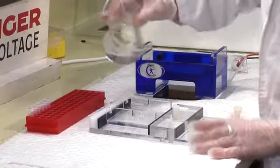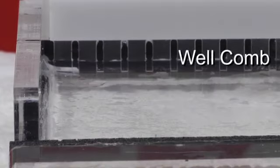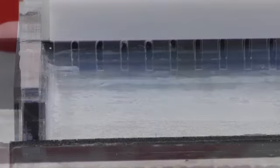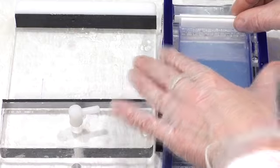So first we've got to make a gel. We just pour melted agarose into a gel caster, we add a well comb to make the wells, and then we leave it to set. Once our gel is set, we just put it into the gel tank. The tank contains a buffer solution which is hooked up to positive and negative electrodes.